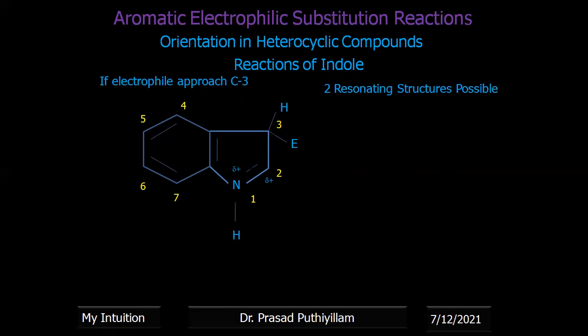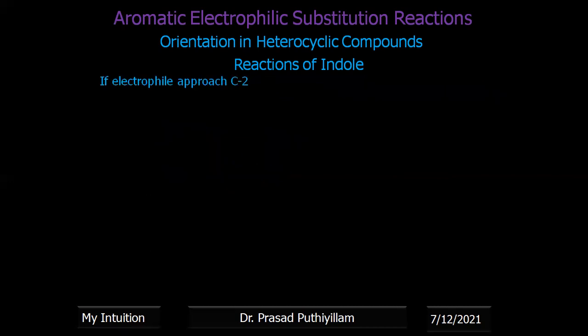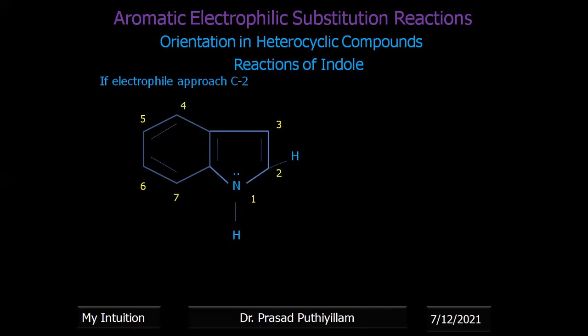Therefore two resonating structures are possible if the electrophile attacks position 3, with partial positive charge on nitrogen and partial positive charge at position 2. Now we will see the other case: if the electrophile approaches carbon 2. We will look at what resonating structures will contribute towards the stability of the intermediate.